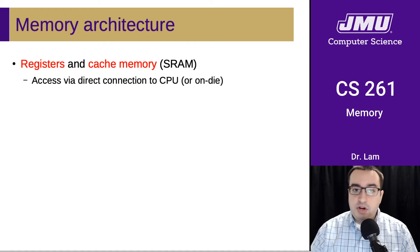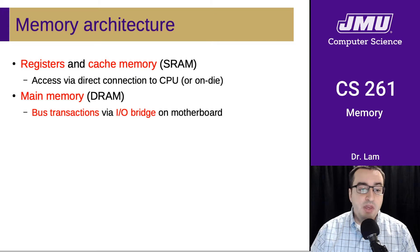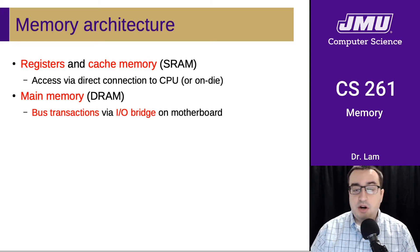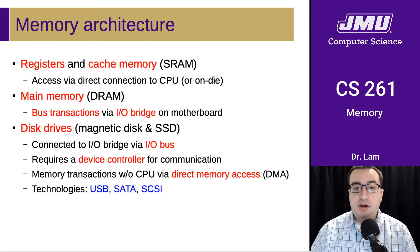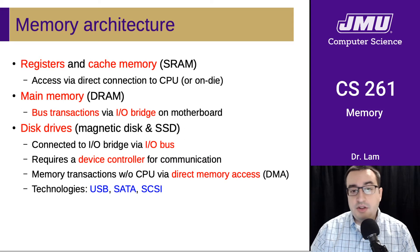So just in summary: we have registers and cache memory, which are SRAM and are directly on the CPU. The next level is main memory, or DRAM, which is accessed using bus transactions over the IO bridge. There are disk drives for secondary storage that are connected via the IO bus and require device controllers in order to access them.